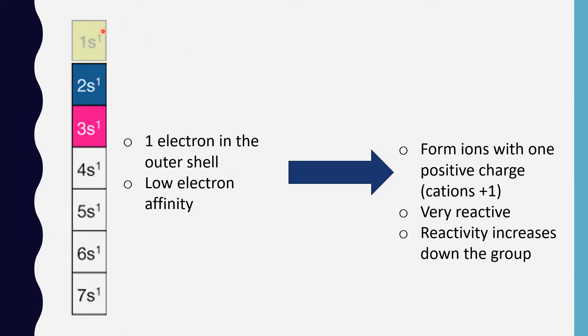Now we're going to be talking about the electron configuration of the elements in Group 1A or the alkali elements. We already stated they all have one electron in the outer shell and low electron affinity. Because they have only one electron, they're going to be giving it off really easily and they're going to be forming ions with a positive charge, so-called cations.